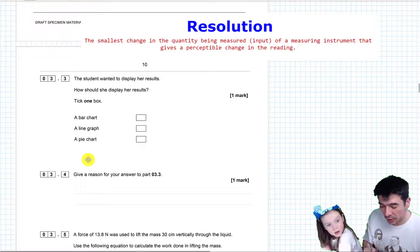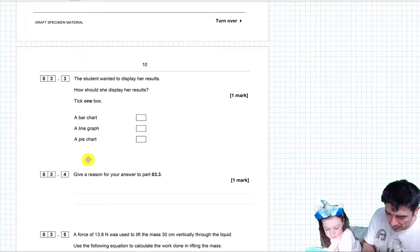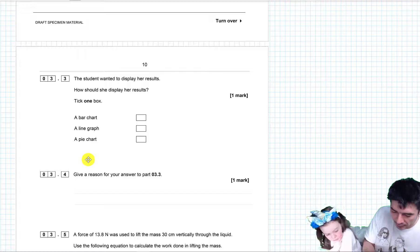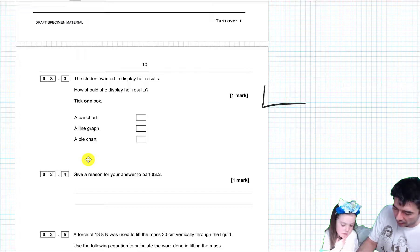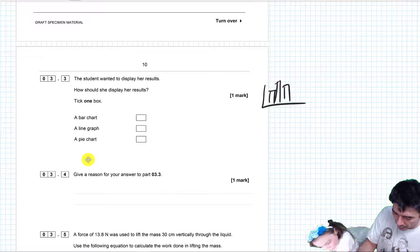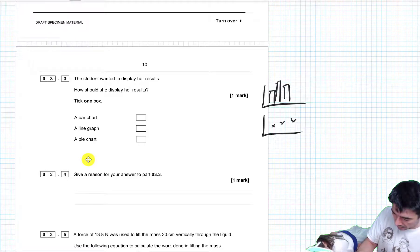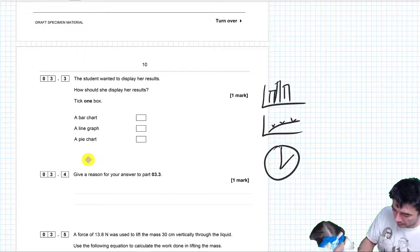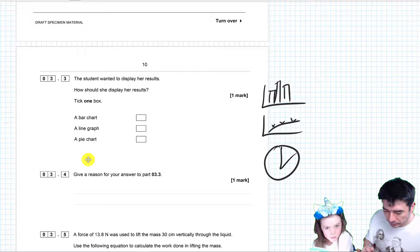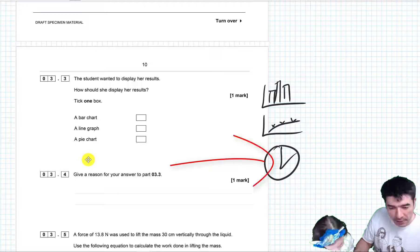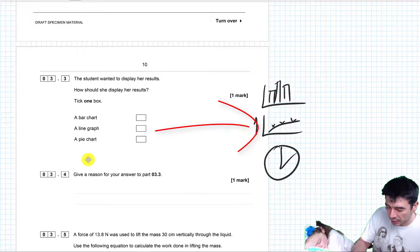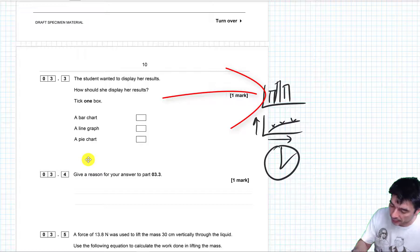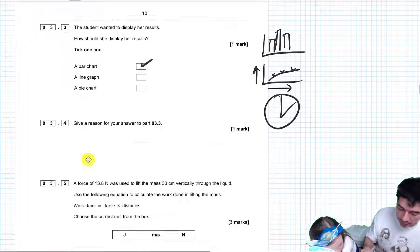Let's look at question three. The student wants to display her results, how should she display her results? Tick one box. We have a bar chart, a line graph, or a pie chart. So we could have a graph that looks like this, we could have a graph that looks like this, we could have one of these jobbies. This is good for showing percentages of things, if you have a hundred percent of a product and it's being shared among things, that's good for that. This is good for showing how one continuous variable changes with another continuous variable. And this is good for showing how different categories compare. And I think we're comparing different categories of liquid here, so I would go for the bar chart.